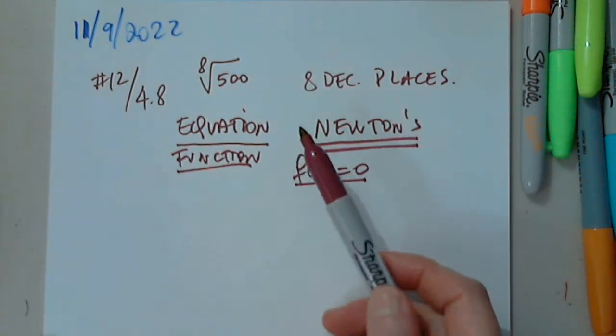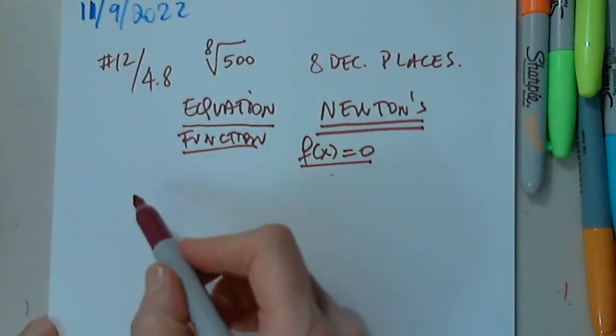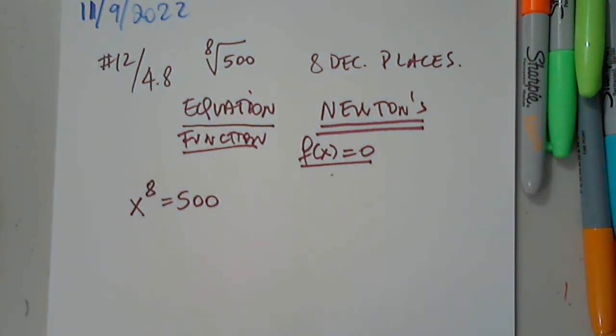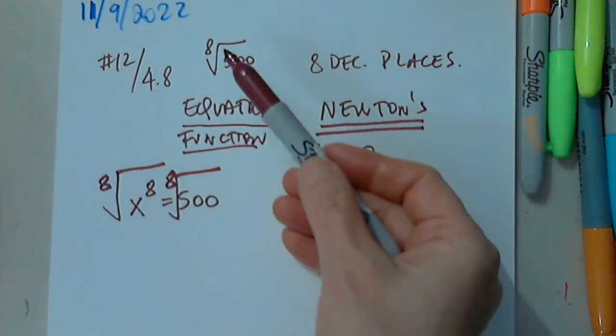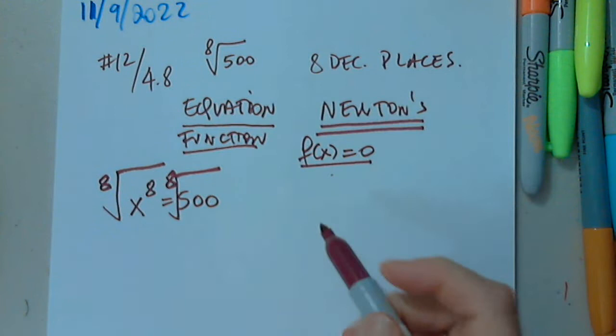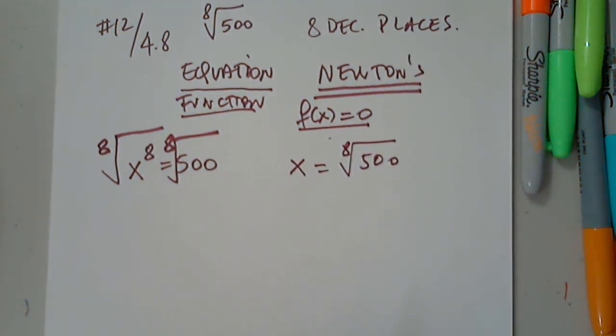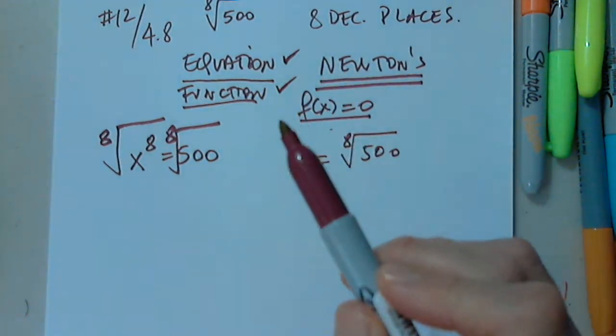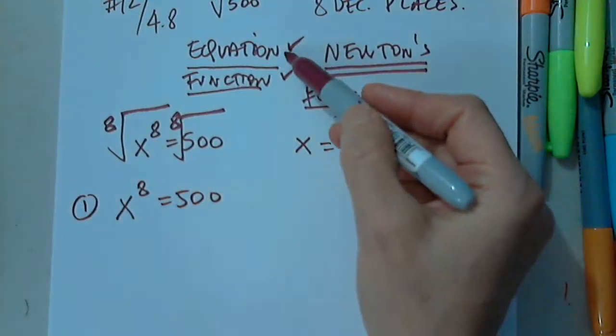But I need to create all these. So how do I create a function that has this as a solution? Very easy. x to the eighth power equals 500. How come? Because I have to apply the eighth root to both sides. And then I get x equals the eighth root of 500, which is the approximation of this. But I have to have an equation, I have to have a function. So x to the eighth equals 500. This is number one, this is my equation.